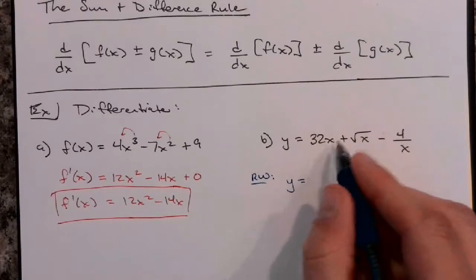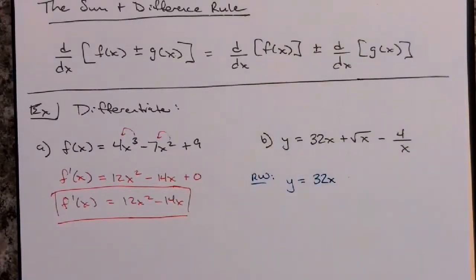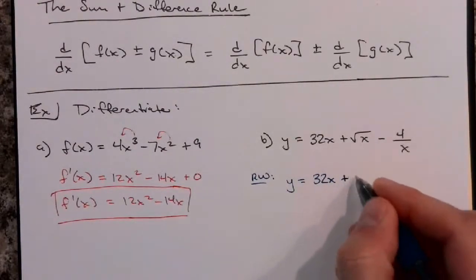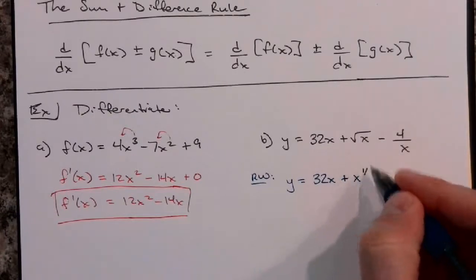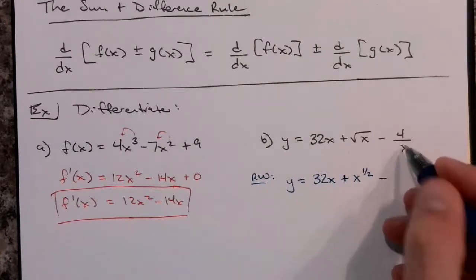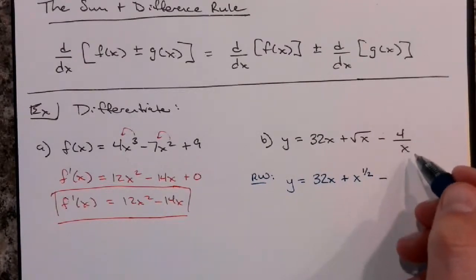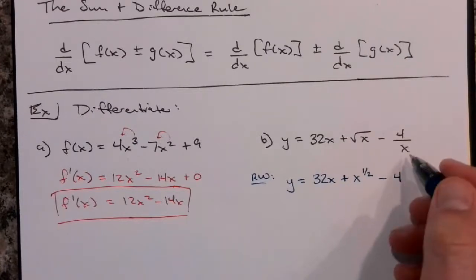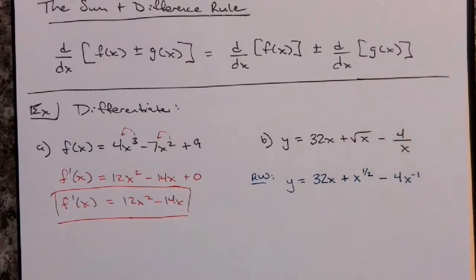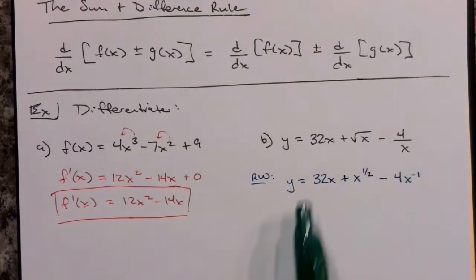This is the same function, so make sure you still call it y. So y = 32x — that doesn't need to be rewritten, we already have x to a power. Plus: how do I rewrite the square root of x as x to a power? The index of the radical always goes in the denominator of the exponent, so it's x to the 1/2 for a square root. Minus 4/x: the x is what I want to move to the numerator, so the minus 4 stays, and x to the first power in the denominator moves up as x to the negative 1.